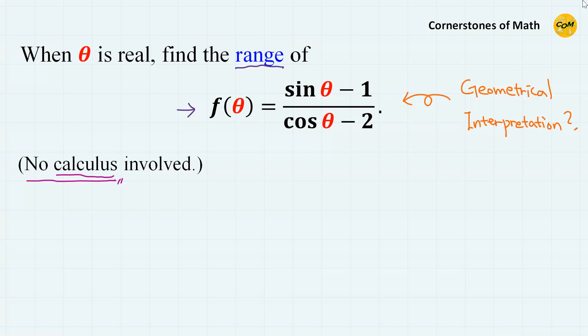What is the geometrical interpretation of this problem? Let's take a look at the way f theta is defined. Of course, this is a rational function mixed with some trigonometric functions, but we can also argue that this is the expression for the slope.